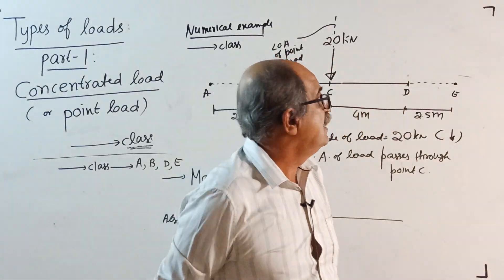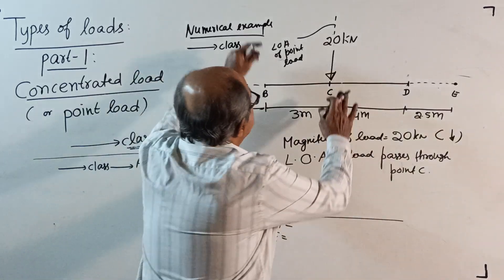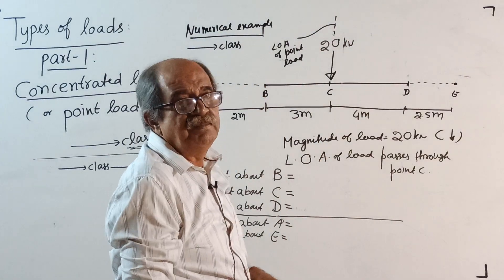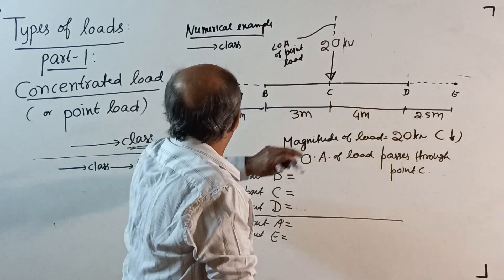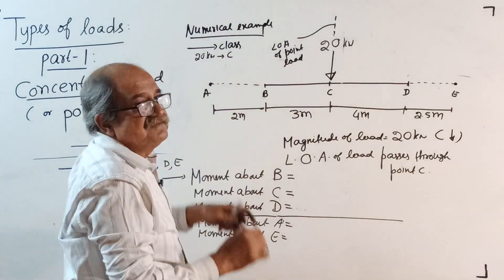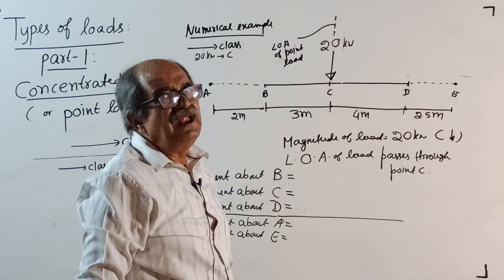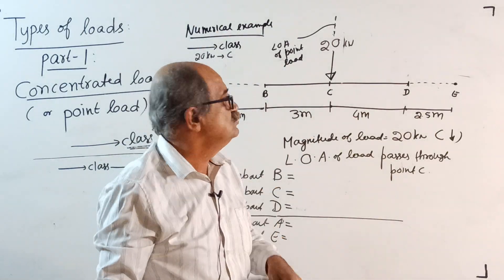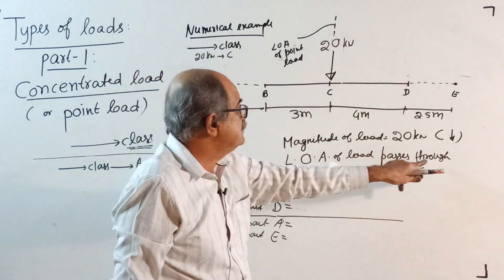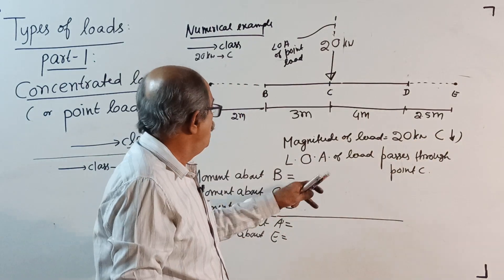Consider a numerical example: a load of 20 kilonewtons — this is the line of action, 20 kilonewtons acting through a point C as shown in the figure. So the class is only about: 20 kilonewtons, vertically down, acting through point C. Magnitude of the load: 20 kilonewtons. Direction: down. Note — LOA (line of action) of the load passes through point C. Now we want moment.